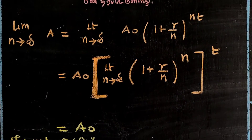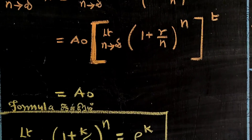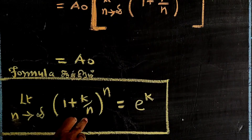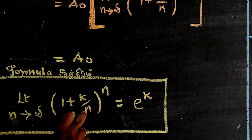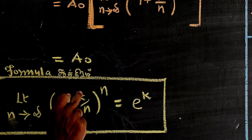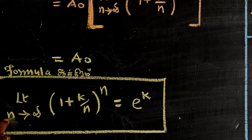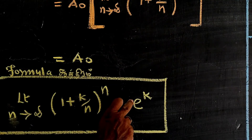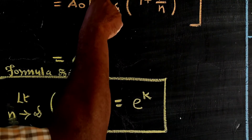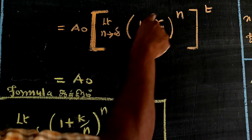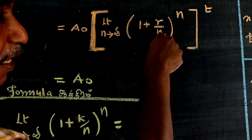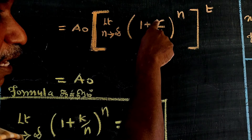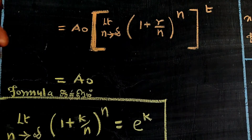We use the known limit formula: lim(N→∞) of (1 + K/N)^N = e^K. Applying this, lim(N→∞) of A₀ · (1 + K/N)^(Nt) = A₀ · e^(Kt). Now substituting K = R, we get lim(N→∞) of A₀ · (1 + R/N)^(Nt) = A₀ · e^(RT).